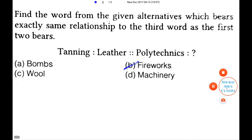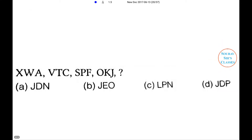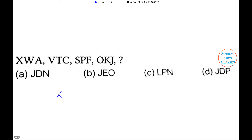Next problem. Replace the question mark with the suitable option. The sequence is: x, w, a, v, t, c, s, p, f, o, k, j, then the question mark. The pattern is: x - 2 = v, - 3 = s, - 4 = o, - 5 = j. Then w - 3 = t, - 4 = p, - 5 = k, - 6 = e.